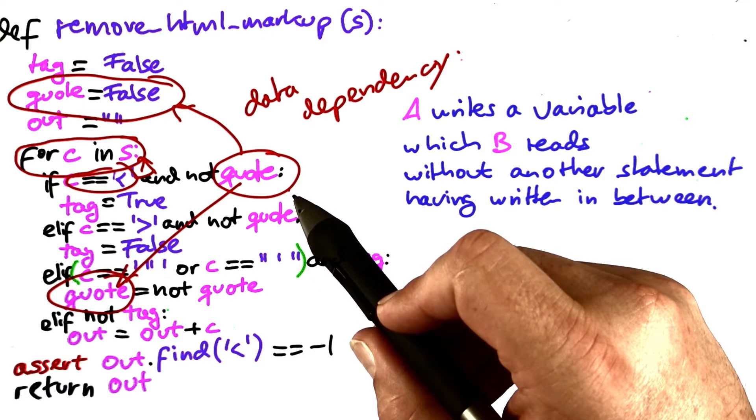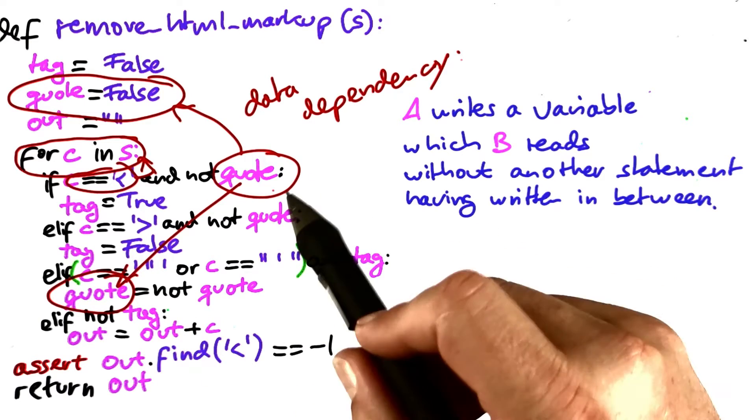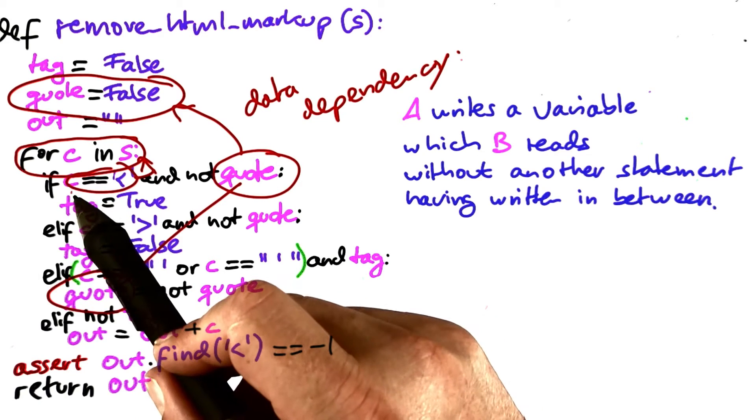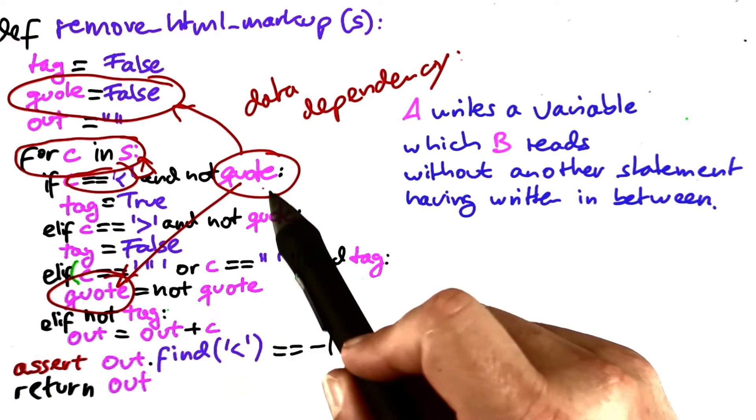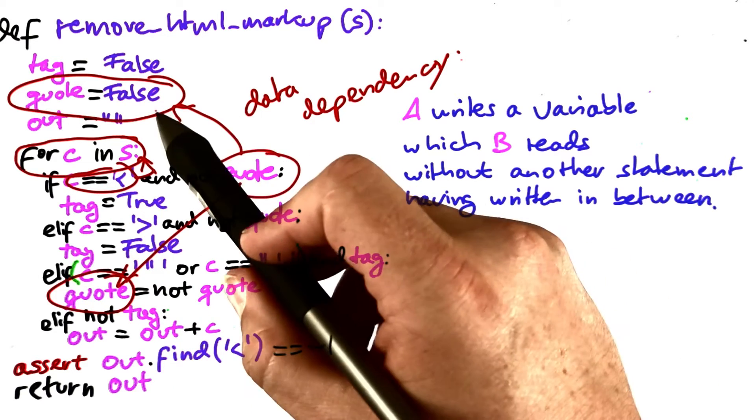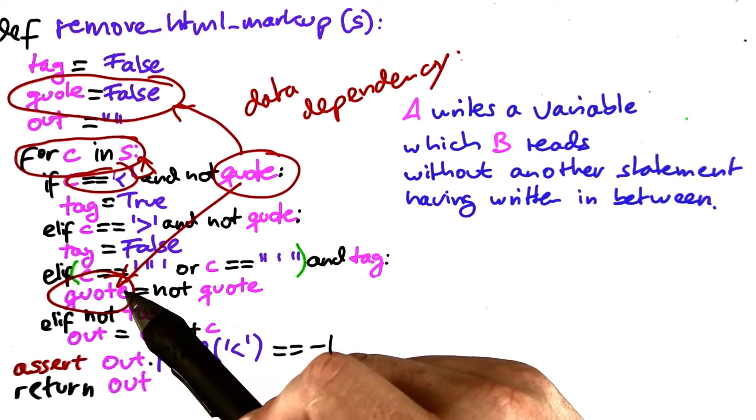When we're reasoning about a program, our reasoning follows these dependencies. In this case, if we want to know where c comes from or where quote comes from, we follow the dependencies to the specific locations.